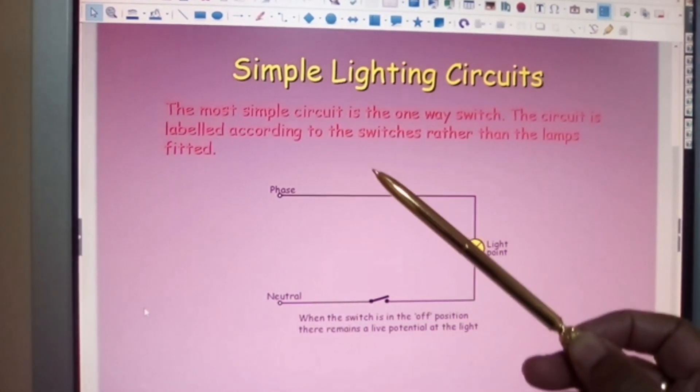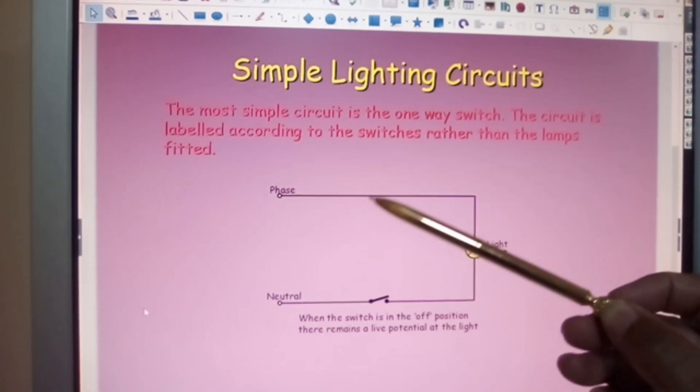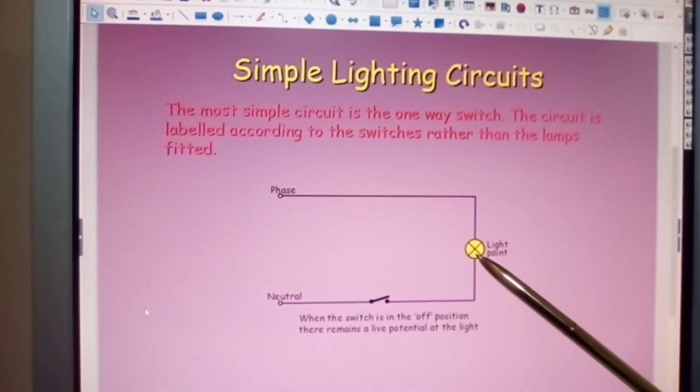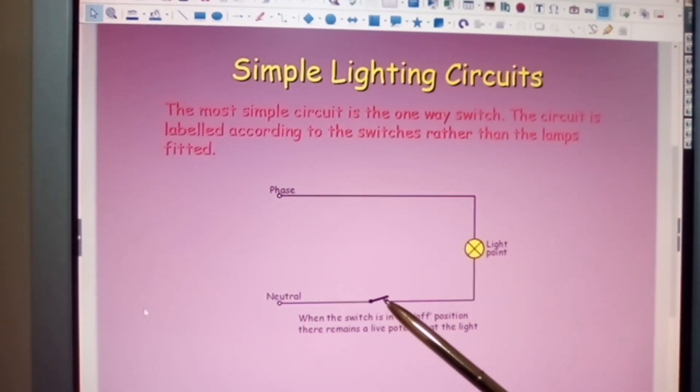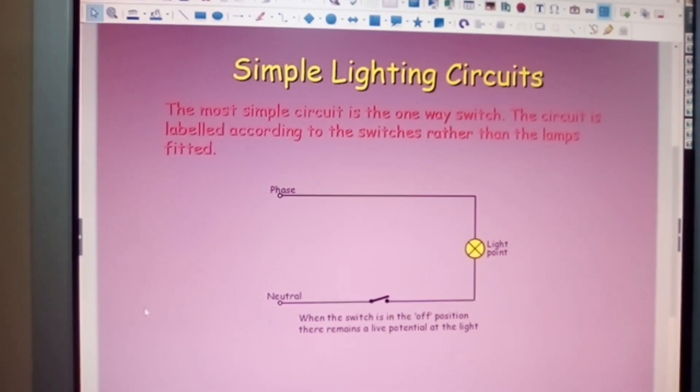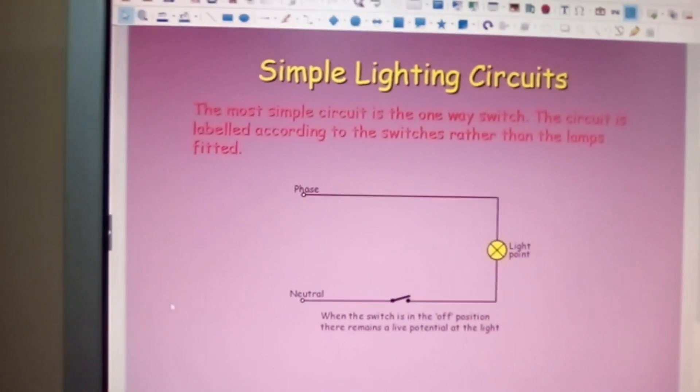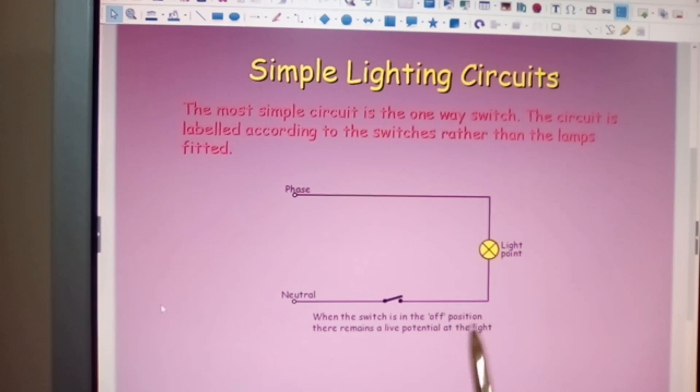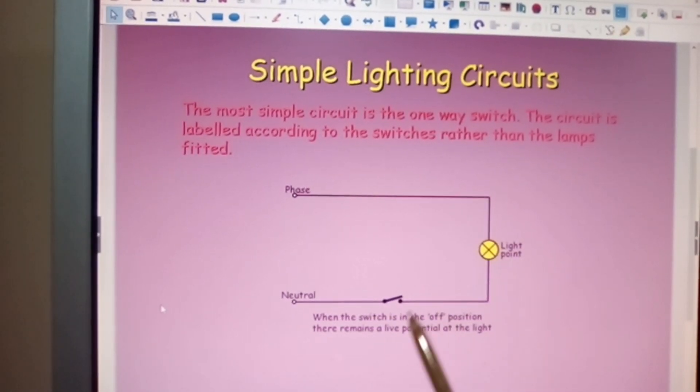Now obviously there will be a switch somewhere in between here. You will never have a phase conductor going directly to a lighting point and the switch will not be in the neutral. So for start here, when the switch is in the off position, there remains a light potential at the light.